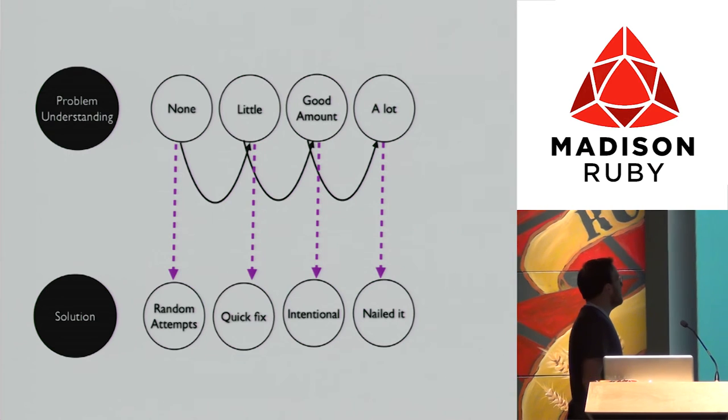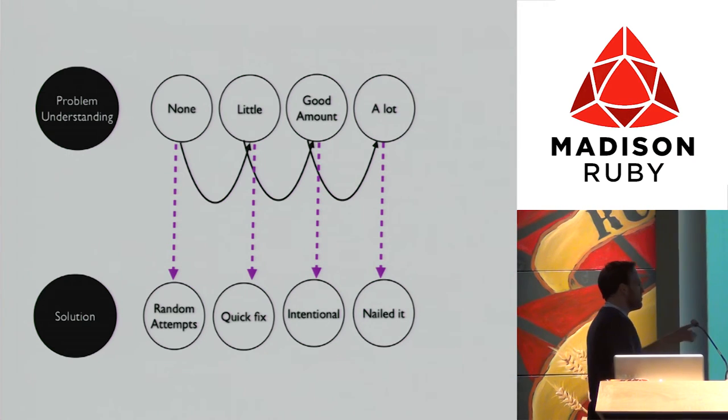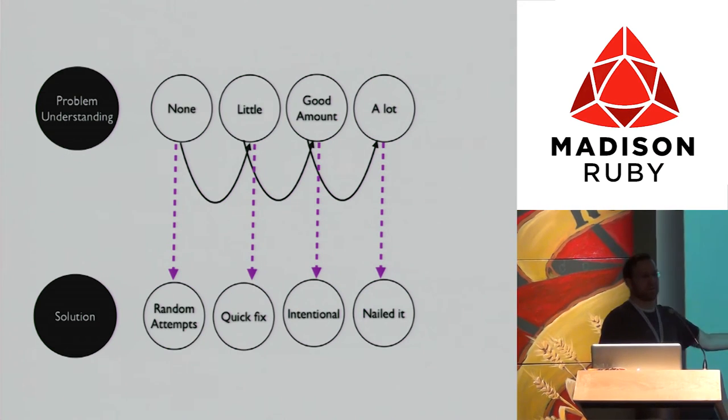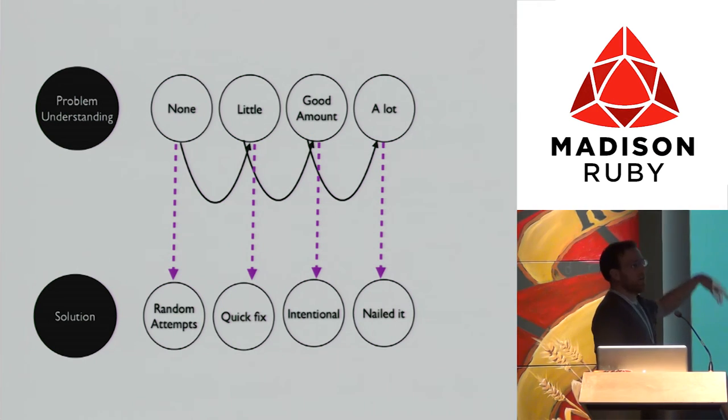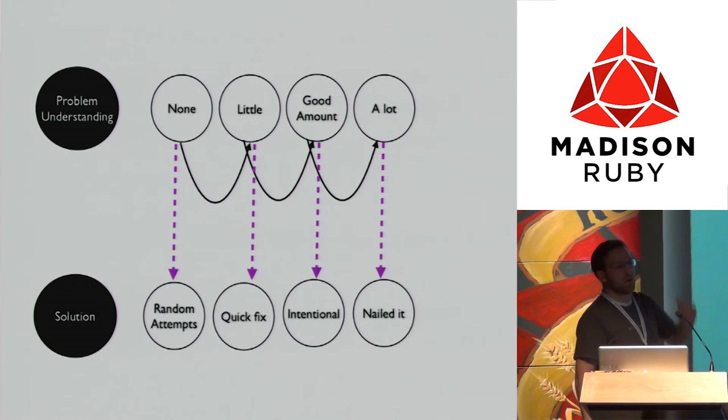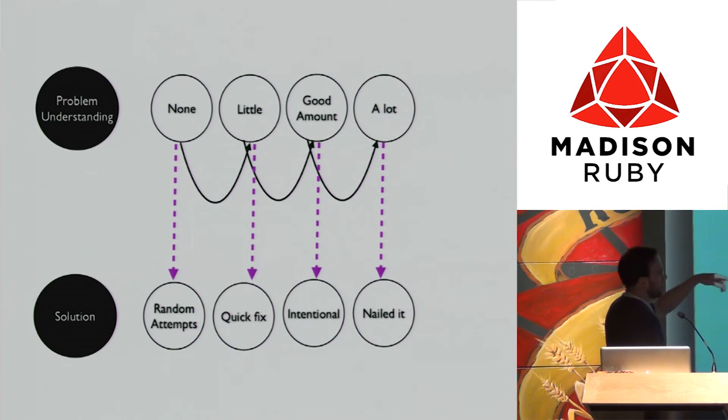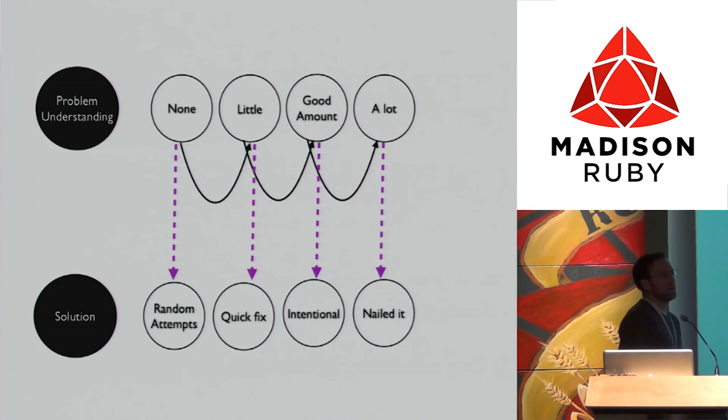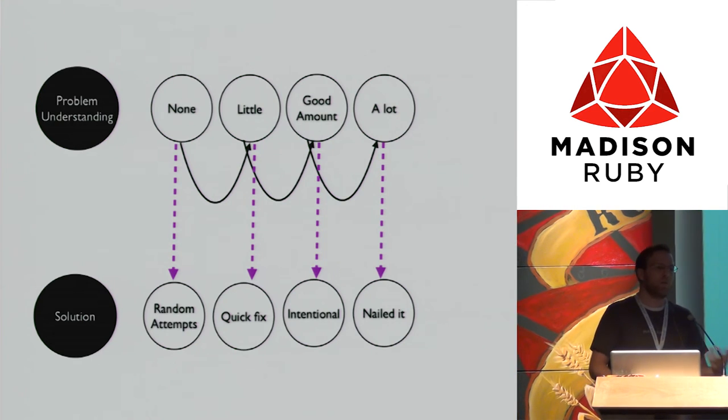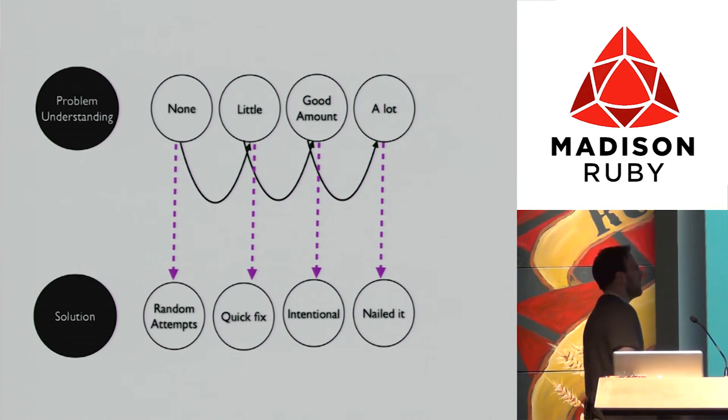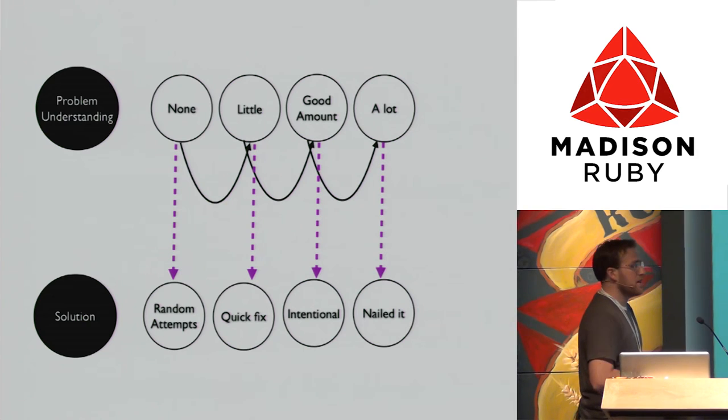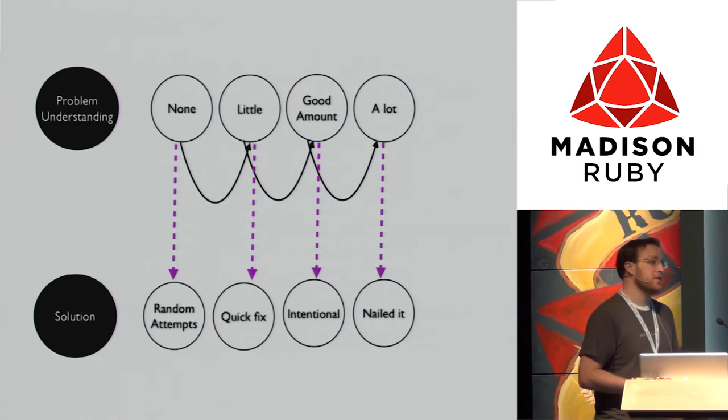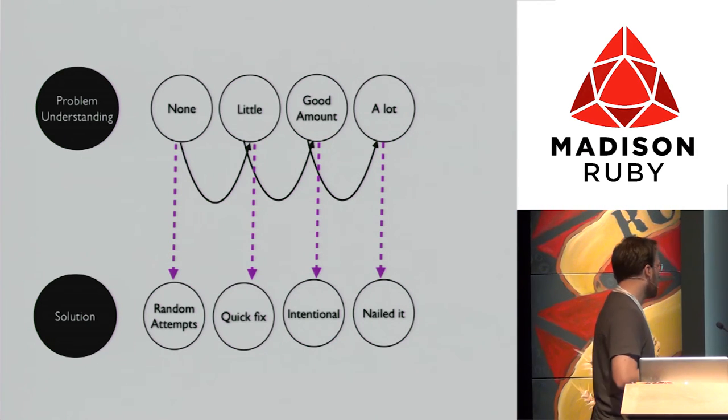Another way to look at this: if we have no problem understanding, one possible pathway is we're just going to do random things to see what works, see what shakes. Otherwise maybe we have the intentional decision to learn a little bit more about our problem. At that point, if we understand it a little but not a lot, we might do a quick fix—monkey patch some stuff in there. Otherwise, if we understand a good amount about our problem, we can intentionally make better decisions about how we're going to solve that in code.